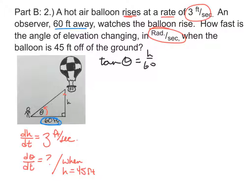Obviously, we want to find rates of change, so we have to find derivatives of everything. So a derivative of tangent is secant squared theta dθ/dt. And the derivative of h over 60 would be just 1 over 60 dh/dt.